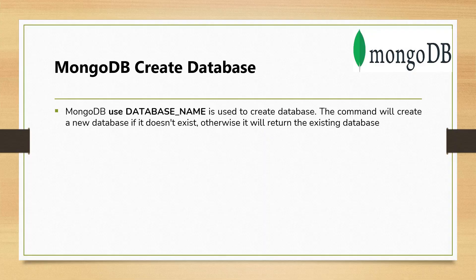To create a database in MongoDB, you have to use the `use` command. You write the command `use` followed by a space and the database name. It will create the database if it doesn't exist. If that database is already existing, then it will return the existing database.